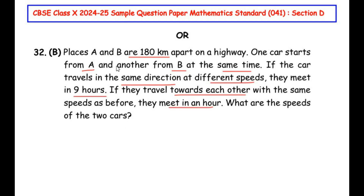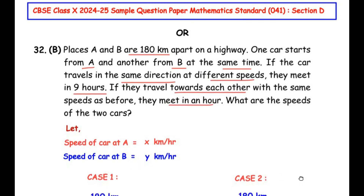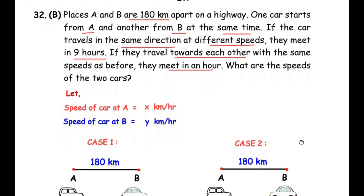Let us try to understand the question first. There are two places A and B which are 180 kilometers apart, with one car at point A and another at point B. Since the cars have different speeds, let the speed of car at place A be x kilometers per hour and the speed of car at place B be y kilometers per hour. The question is divided into two cases.